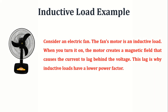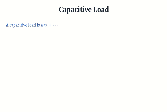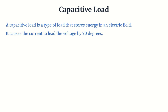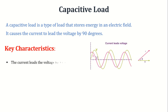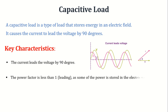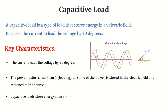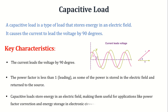Last comes the capacitive load. A capacitive load is a type of load that stores energy in an electric field. It causes the current to lead the voltage by 90 degrees. In a capacitive load, the current leads the voltage by 90 degrees, meaning the current reaches its peak value before the voltage does. The power factor is less than 1, leading, as some of the power is stored in the electric field and returned to the source. Capacitive loads store energy in an electric field, making them useful for applications like power factor correction and energy storage in electronic circuits.